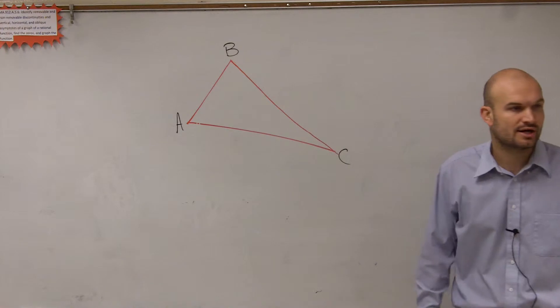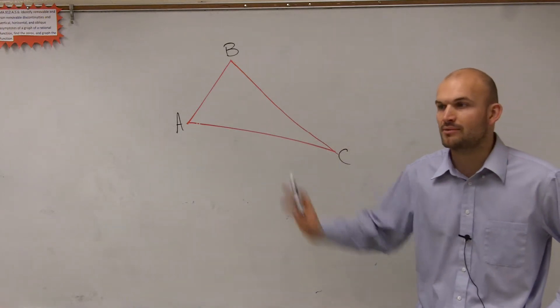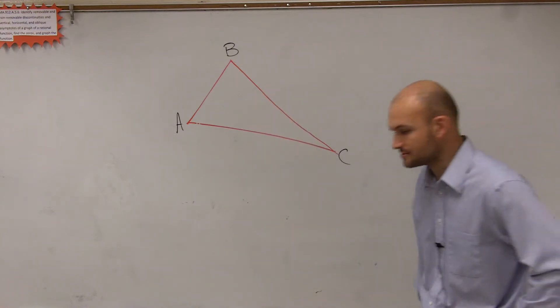And like I said, I'm just arbitrarily picking where I want my A, B, and C to be. Sometimes you might have a problem where they label them. For right now, we can just arbitrarily pick our angles.